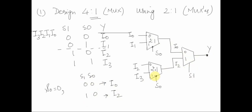Now if S0 is 1, I1 comes into the first MUX and I3 comes into the second MUX. If S1 is 0, I1 is transferred to the output. If S1 is 1, I3 is transferred to the output. So we have successfully designed a 4-to-1 MUX using three 2-to-1 MUXes. I hope you liked this problem solving session — stay tuned for more.